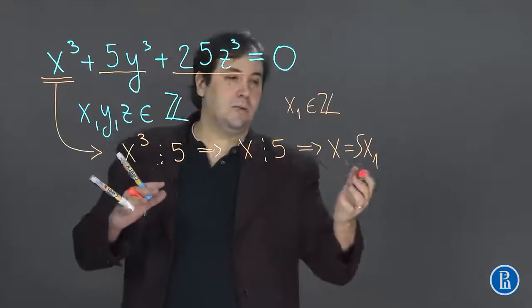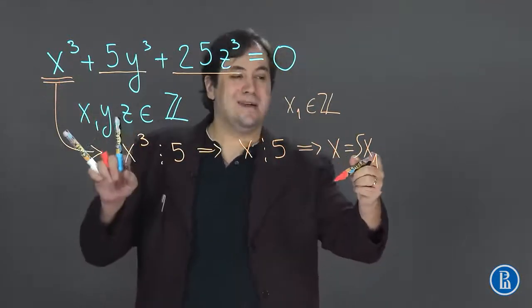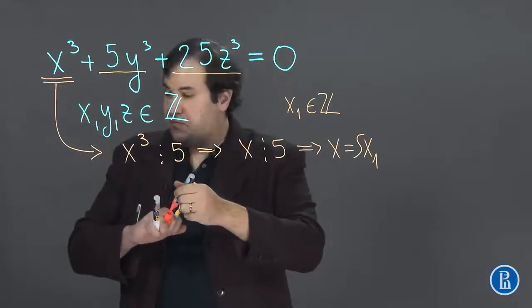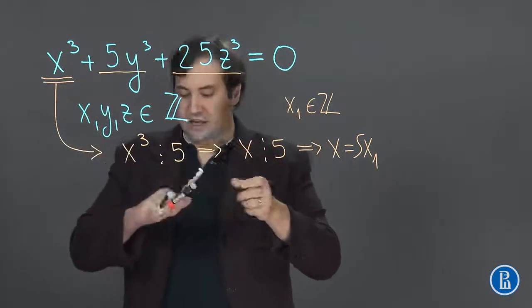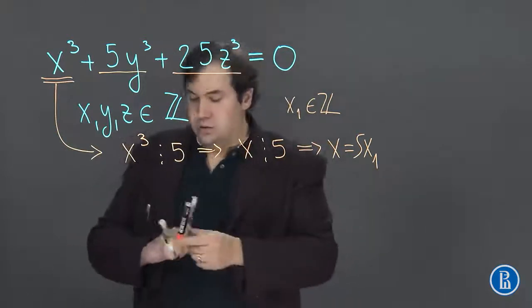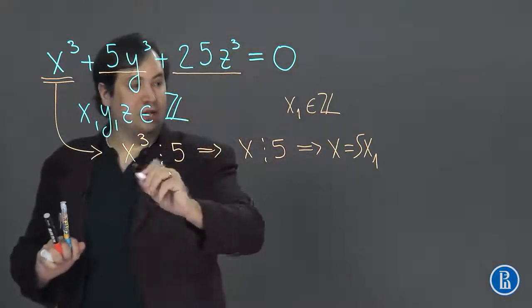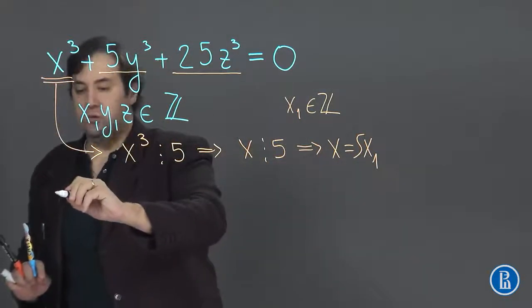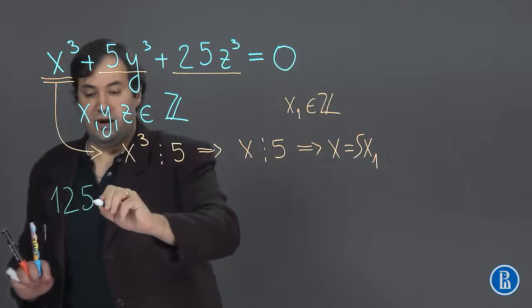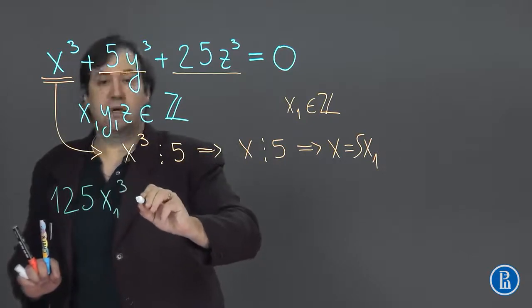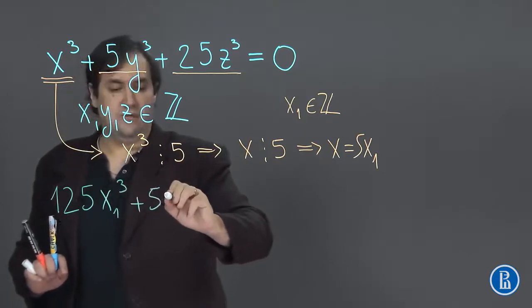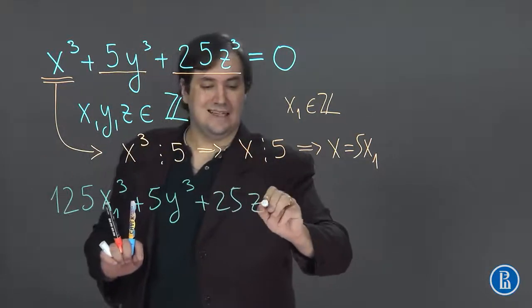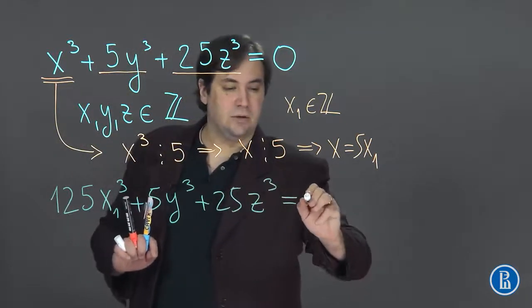So now we can substitute x with 5x₁ in the initial equation and this will bring us to the following equation. Well, 5x₁ to the power of 3 is equal to 125x₁³ plus 5y³ plus 25z³ and this should be equal to 0.